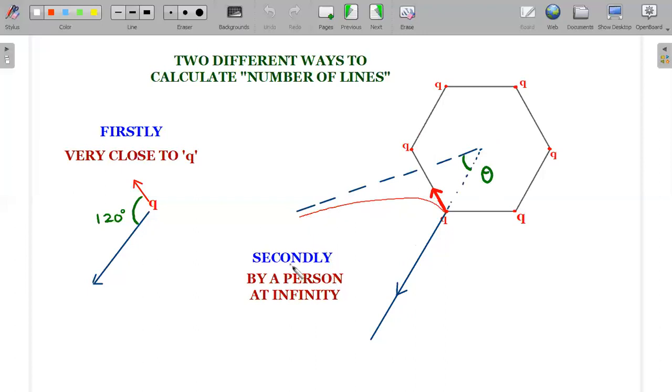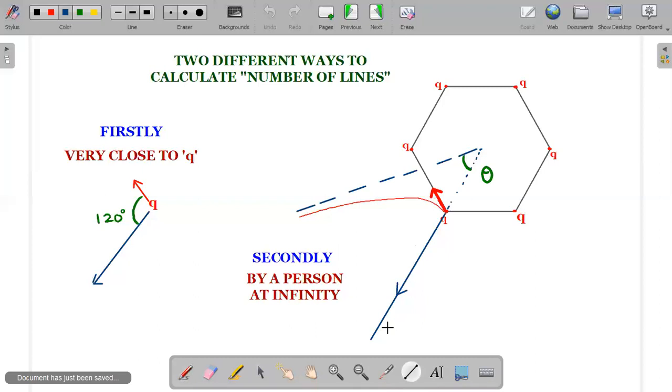In case two of this calculation, I'll try to estimate how many lines are going to be there between this blue and this blue line. There will be many more curved lines in this entire region. So let me shade that region so that you can think of it very clearly. This is that shaded region. In this blue shaded region, the person at infinity is going to calculate the number of lines.